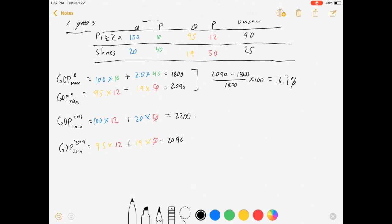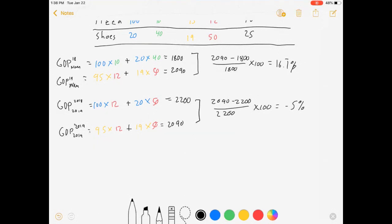What we're going to see here is real GDP has fallen. New minus old divided by old times 100, we have a negative 5% growth rate. So production has fallen by 5%, which shouldn't be a surprise to us. I made it that way. Both pizza and shoes fell by exactly 5%.